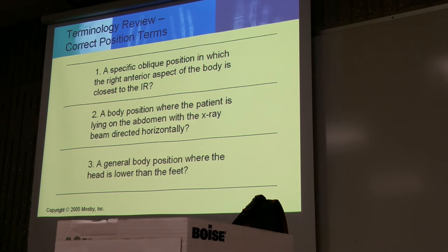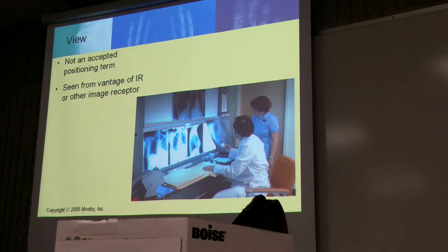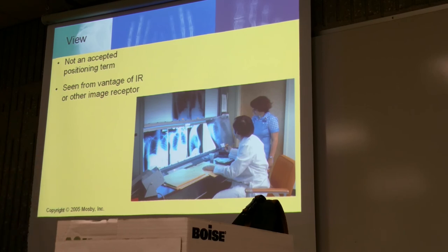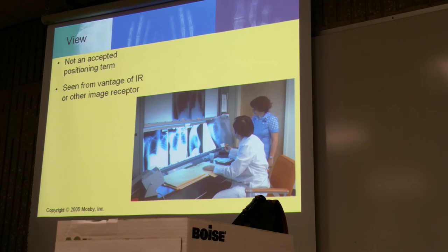Sorry I'm going to fly through this, but we'll go through it again as we go through the course. View — okay, view is the perspective of the image. It's something we don't use a lot when talking about radiographic imaging. It's not accepted as a positioning term. It is seen from the vantage of the image receptor. So basically it's a mirror of the actual position or projection.